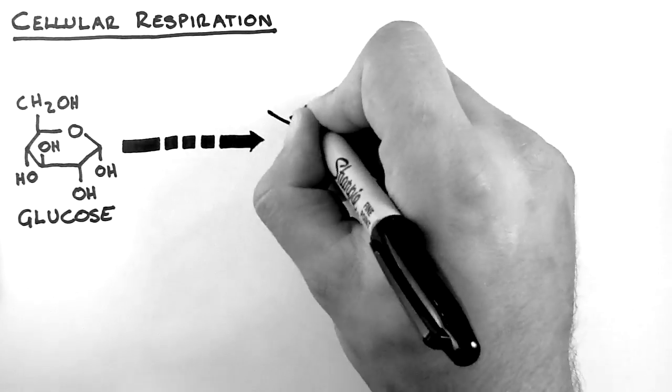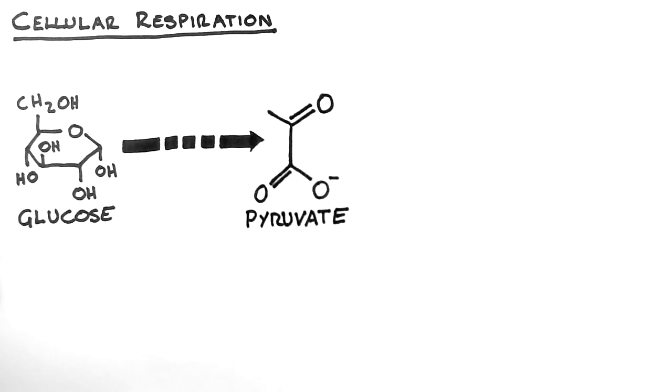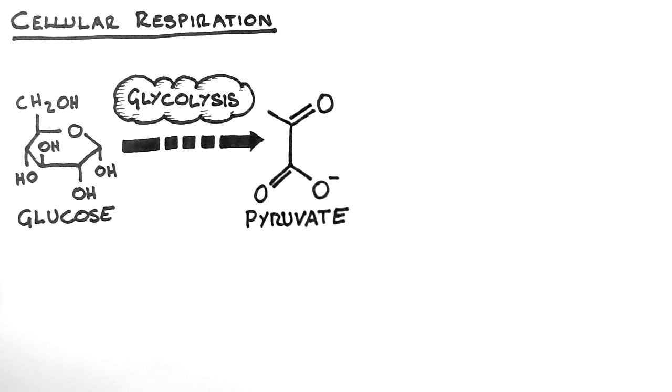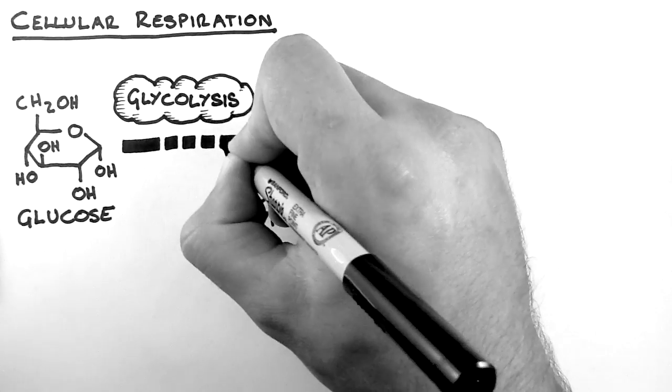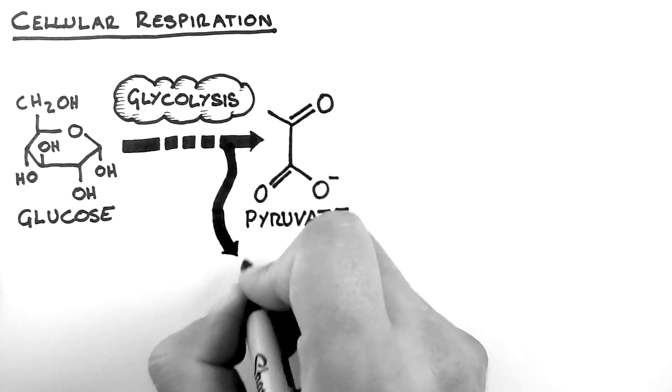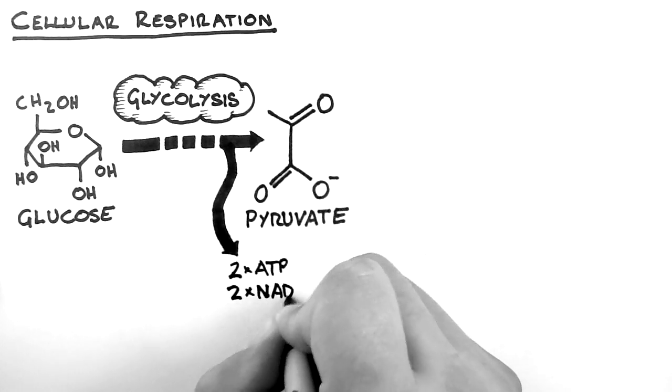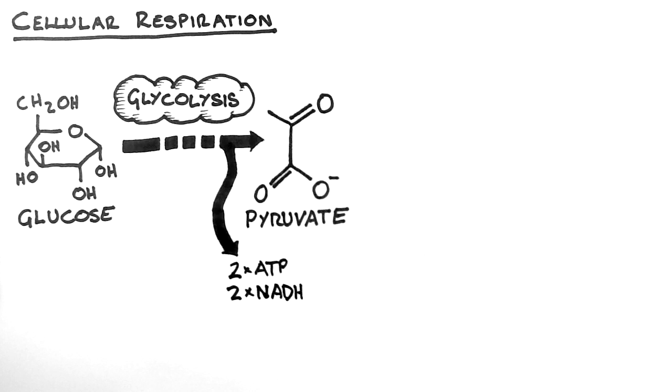Glucose is converted into this molecule, pyruvate, through a series of steps known as glycolysis. We'll look at those steps in a later tutorial. The process of glycolysis produces two of these ATP molecules. It also produces two NADH molecules. These NADH molecules will be converted into ATP later.